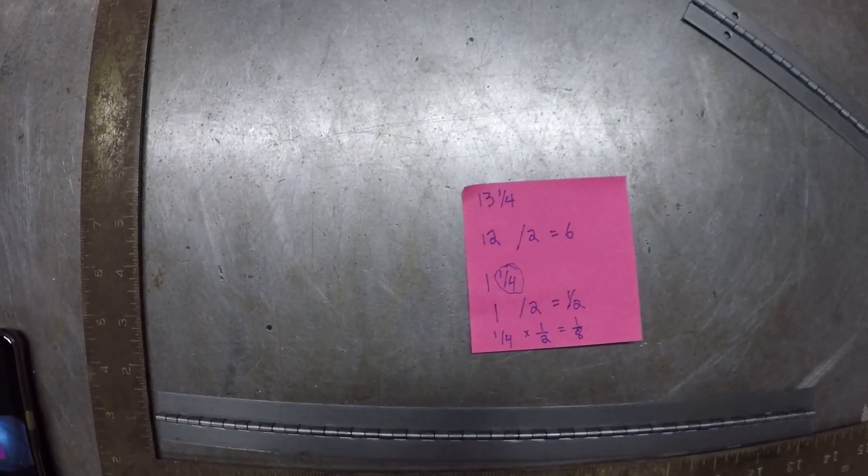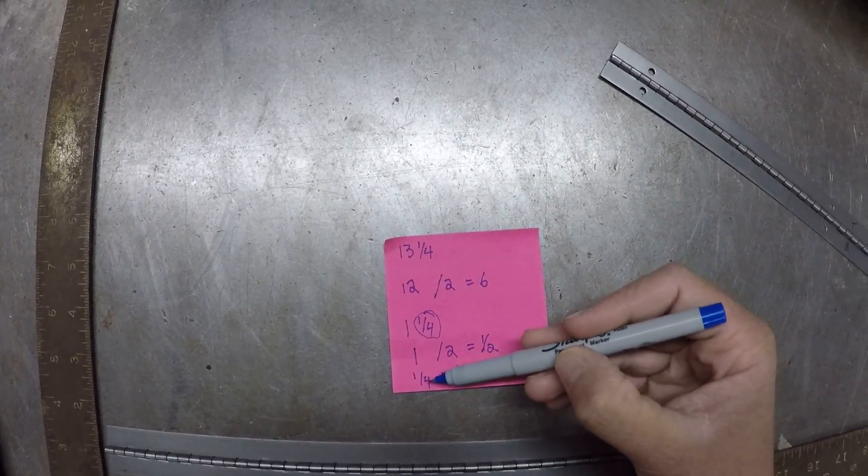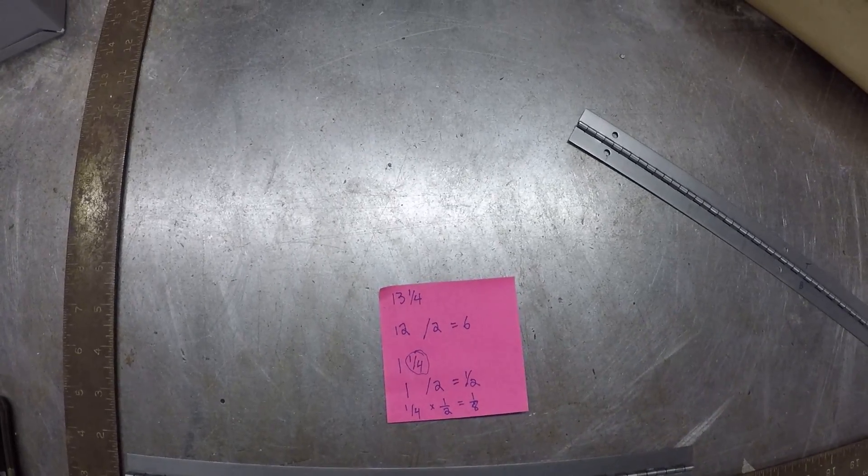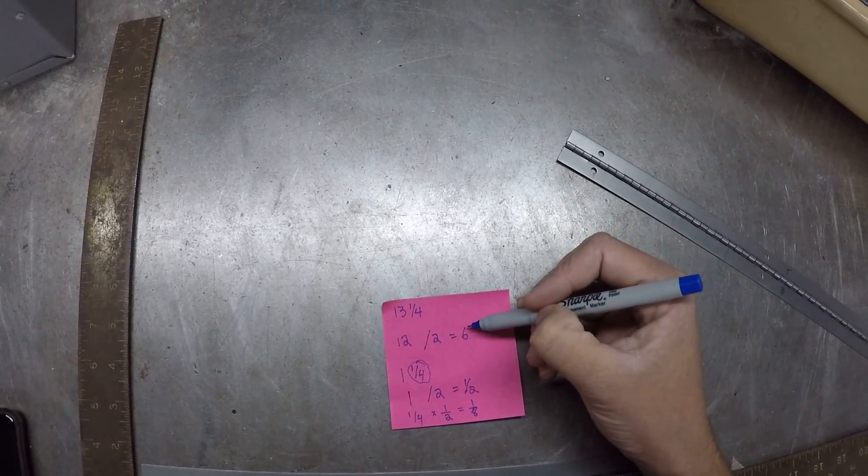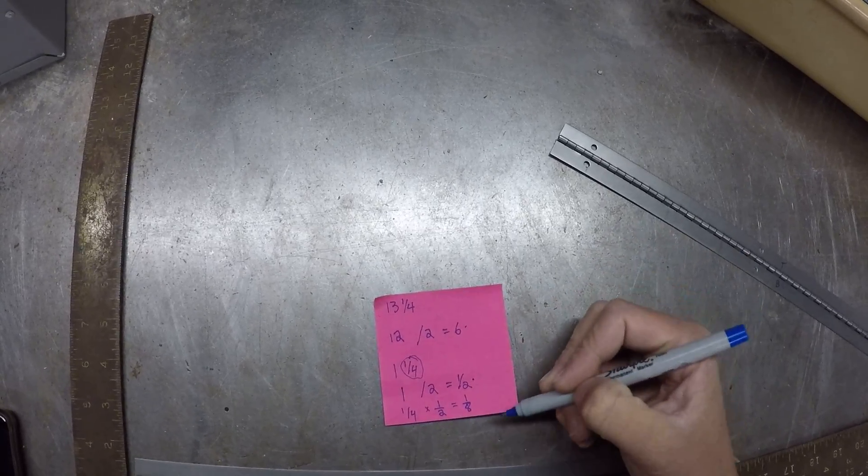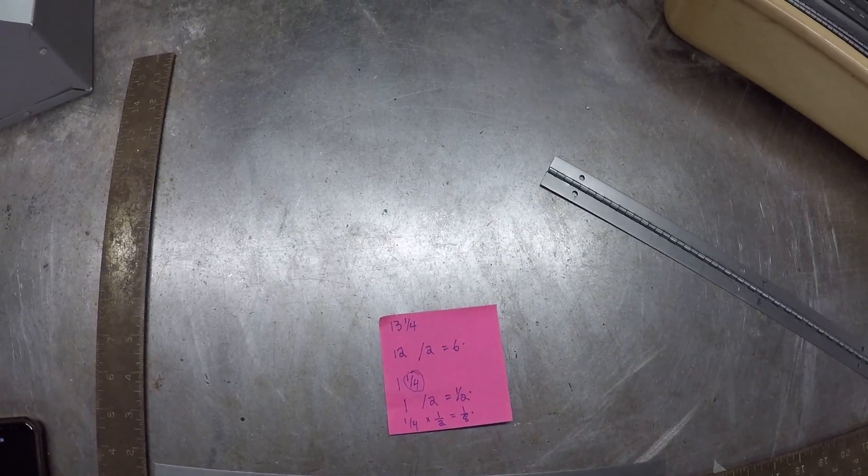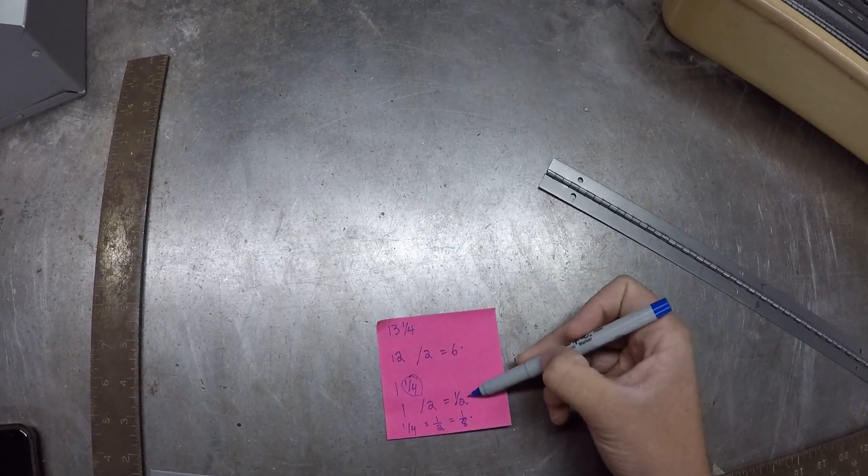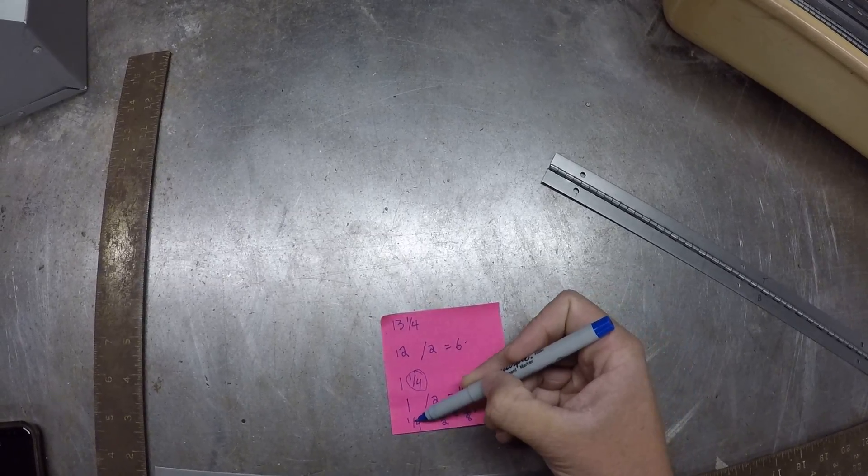So I'm basically just going to be doubling the denominator. So now I have six plus one half plus one eighth. This was half of 12, half of one, and half of that quarter.